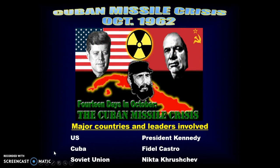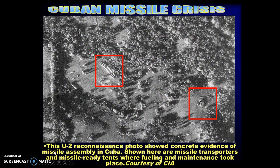During the Cuban Missile Crisis, the major players are President Kennedy as leader of the United States, Fidel Castro as leader of Cuba, and Nikita Khrushchev as leader of the Soviet Union. So what happens in October of 1962?